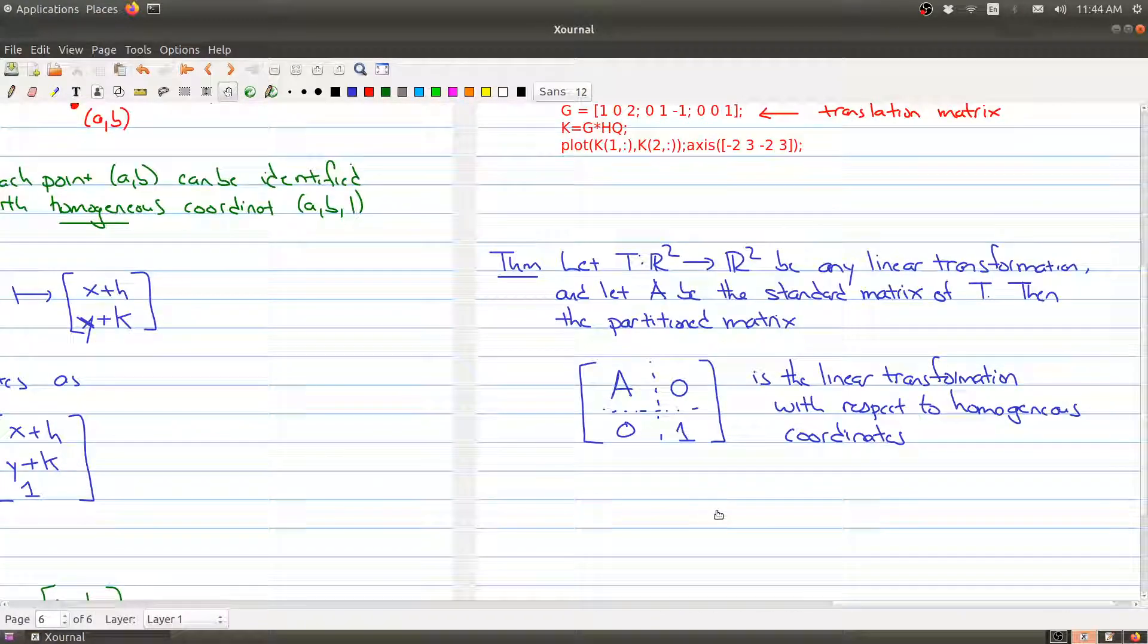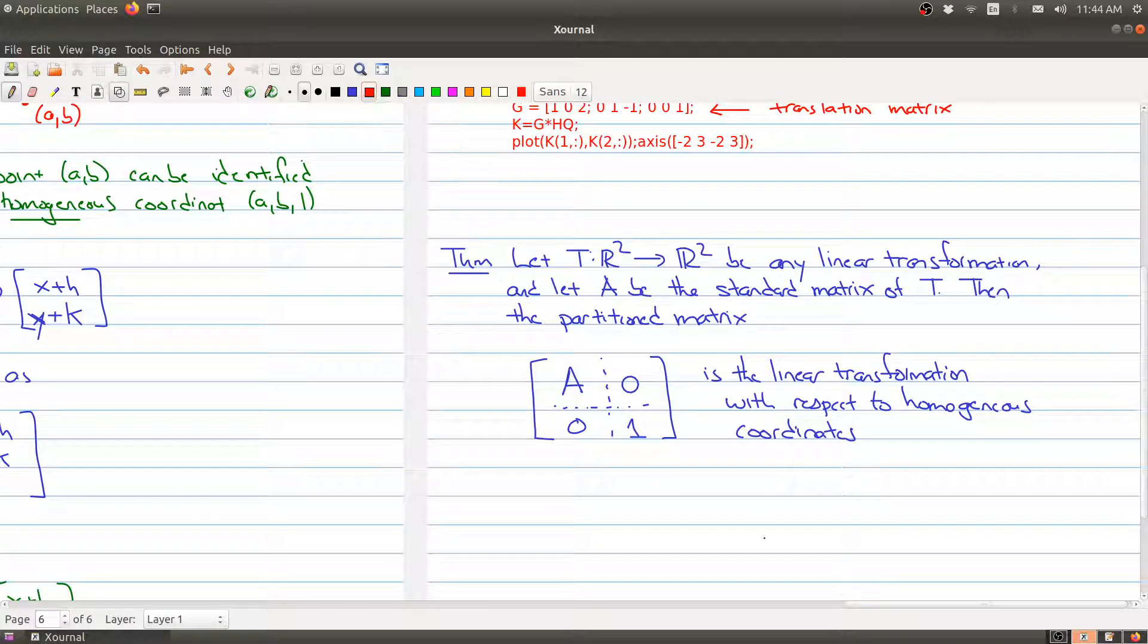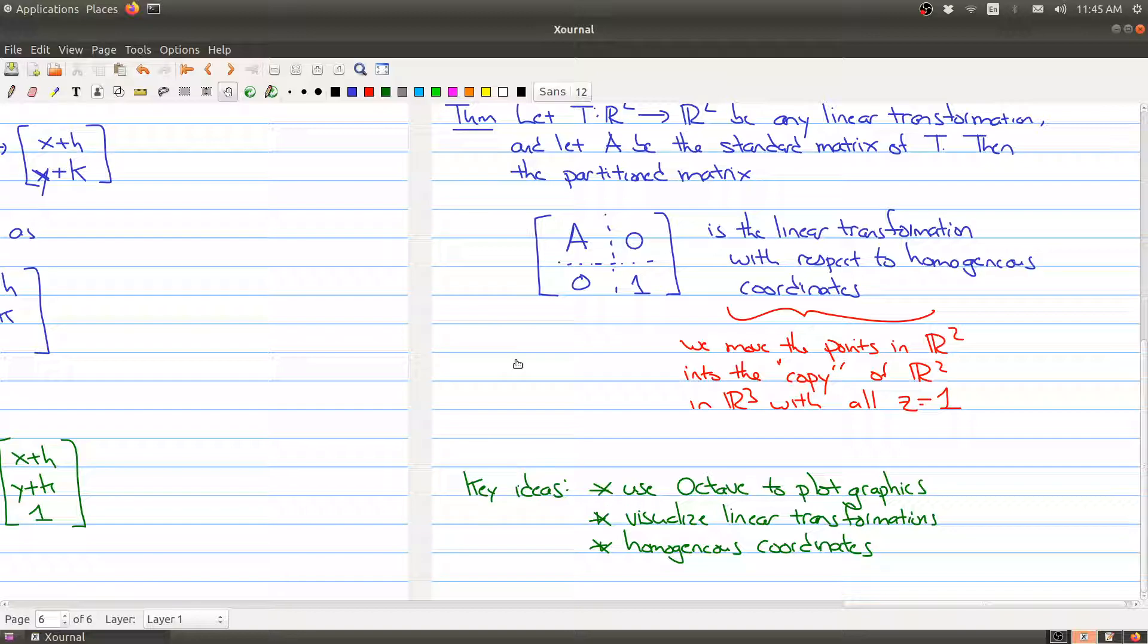Okay, so let me just add a little bit more detail here about what's going on. What we're doing is we move the points in R² into the copy of R² in R³ with all the z coordinates equaling 1. So that means we're just making everything homogeneous coordinates.